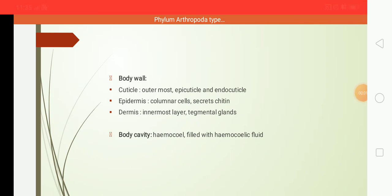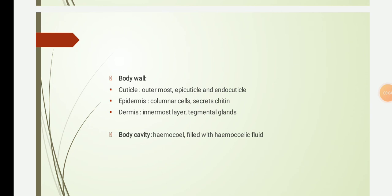Hello students. Today's lecture is a continuation of our last lecture — we are studying the type study on prawns. Prawns belong to the phylum Arthropoda, class Crustacea. In our last lecture we dealt with the systematic position, brief introduction, and the typical pattern of appendages. In today's lecture we will study the body wall, body cavity, circulatory system, respiratory system, and the digestive system in prawns.